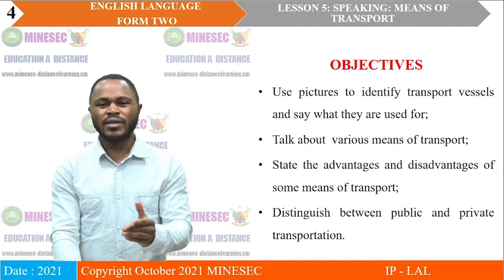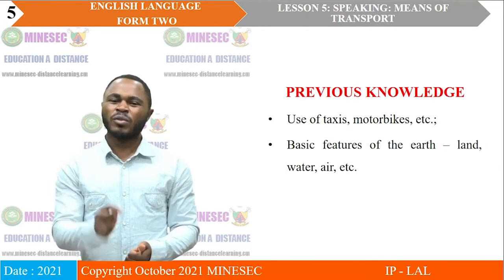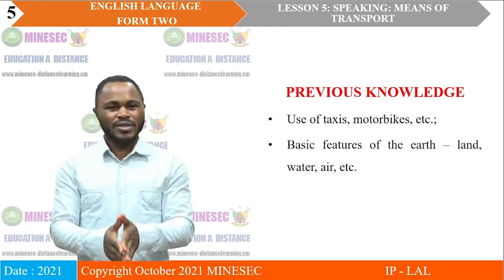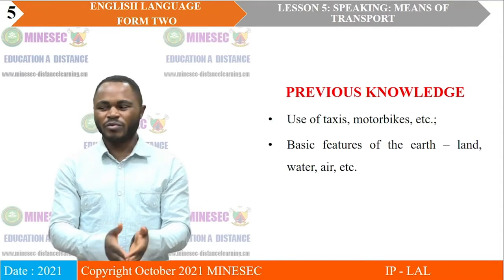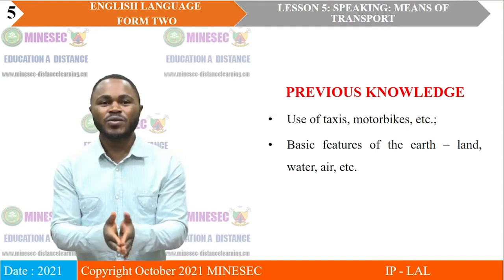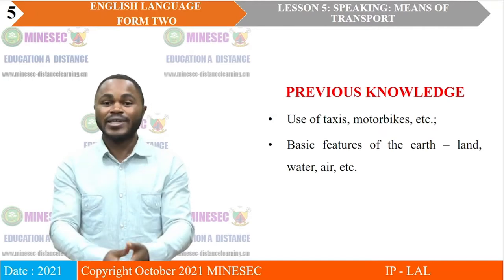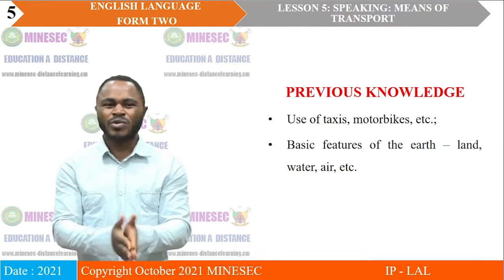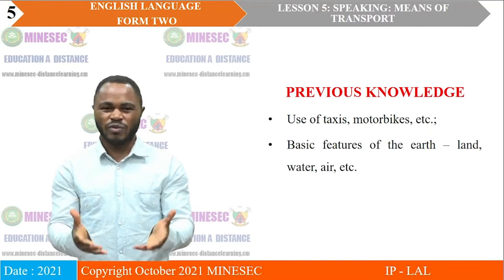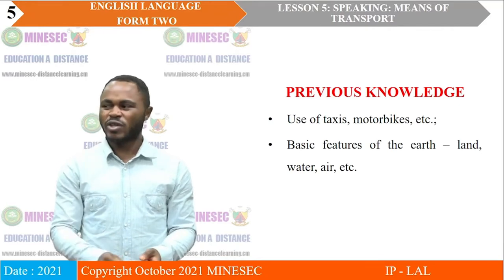Before we explore these means of transport, we must recall that we have had experiences. We are in Form 2, which means we have been in Form 1 and primary school. We have already had relevant experiences with means of transport because we use them daily — motor taxis, motorbikes, buses, planes, trains in some cases, etc. We have the experience of using these means of transport.